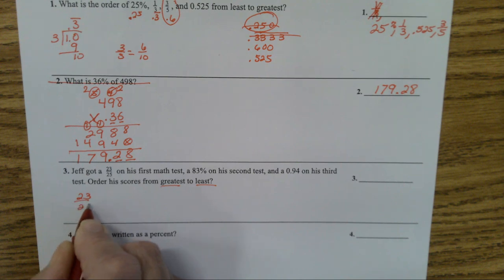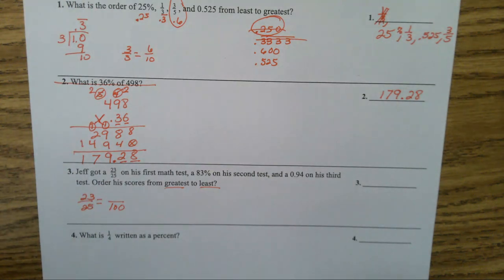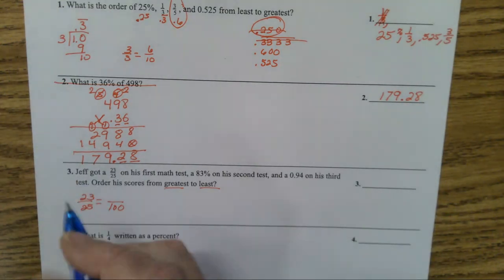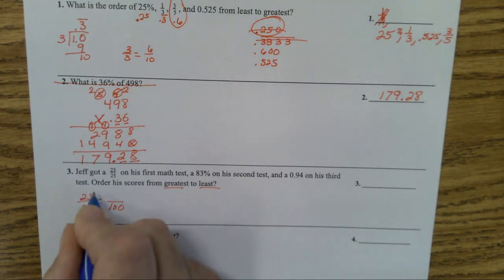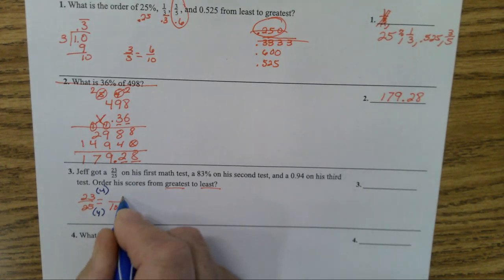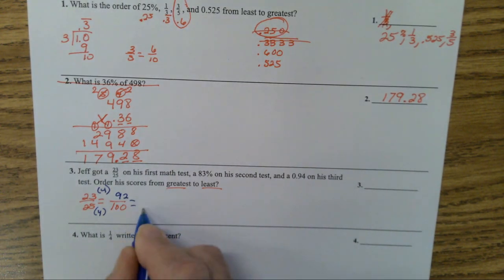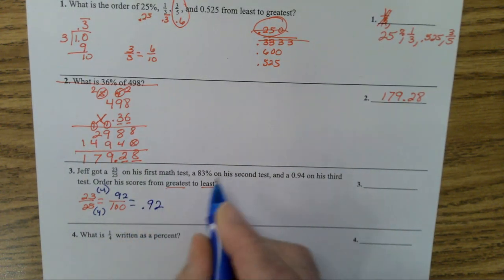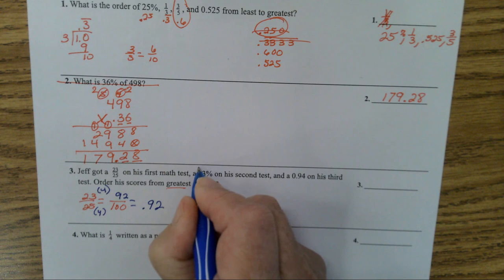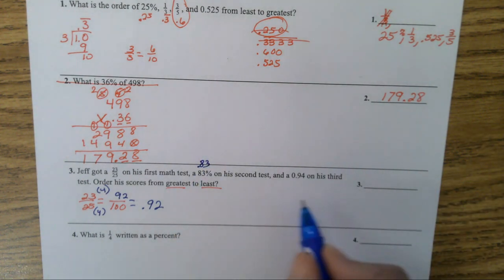25 times what is 100? Four. Write this down kids: 4 times 23 - 4 times 3 is 12, carry a 1. So we have 92/100, which equals 0.92. 83% is 0.83, and 0.94. Which one is the biggest?